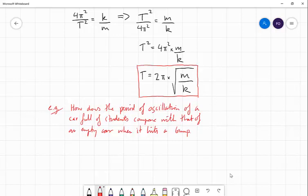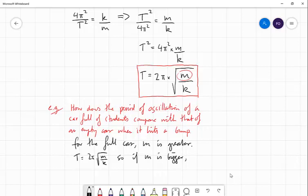So the car full of students, I mean assuming it's the same car with the same suspension, a car full of students will have more mass. So the mass will be bigger for the car full of students. So for the full car, M is greater. T equals 2 pi times the square root of M over K. So if M is bigger, T will also be bigger. And that's because M appears in the numerator here. So if we increase M, then the period is also going to be bigger.